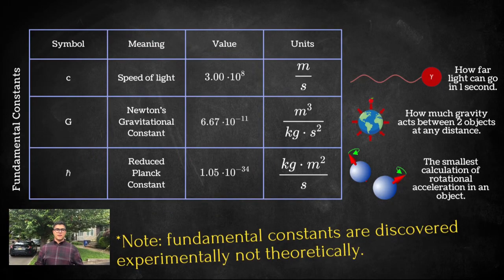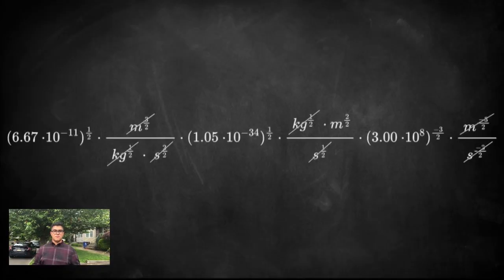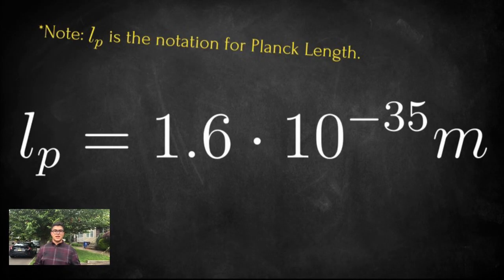The Planck length was discovered by Max Planck via dimensional analysis of three fundamental concepts of the universe to derive a fundamental unit of measurement that is 1.6 × 10⁻³⁵ meters.